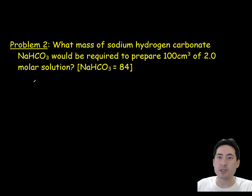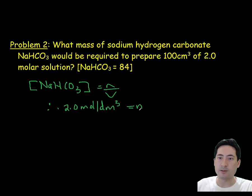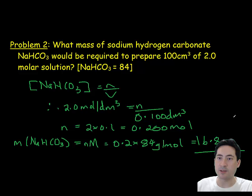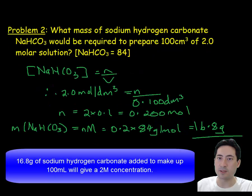The next problem: what mass of sodium hydrogen carbonate would be required to prepare 100 mLs of 2 molar solution? This is important for your experiments, working out what you need and how to calculate it. Concentration is number of moles and volume. We can just put those numbers in there and rearrange later. That gives us 0.2 moles is what we need. We need 16.8 grams and dilute that into 100 mLs, and that will give us our 2 molar solution.